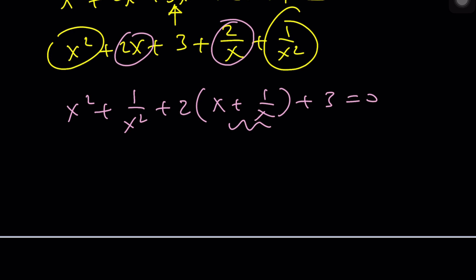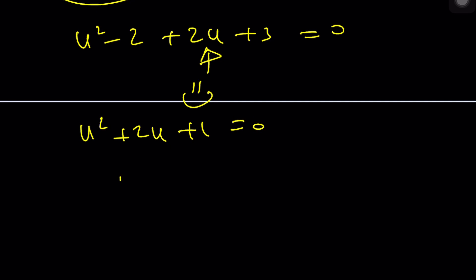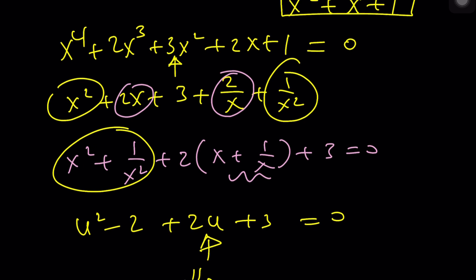Let's call this u. This would be u squared minus 2—think about it—plus 2u plus 3 equals 0. If it's your birthday, happy birthday to you. Now this gives us u squared plus 2u plus 1 equals 0, and that is actually (u plus 1) squared equals 0.